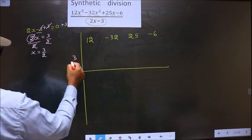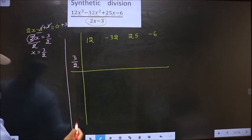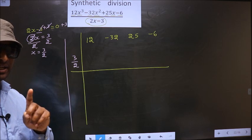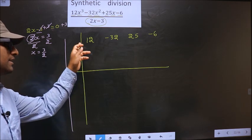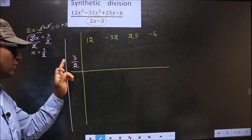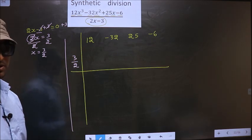This we should write here. So this is our step 1. Writing coefficients taken from the numerator here and x value that you got from the denominator here.